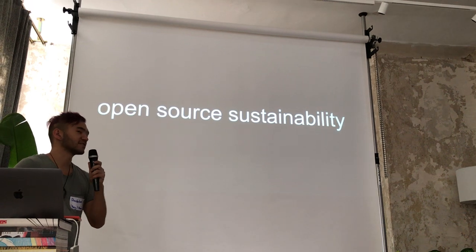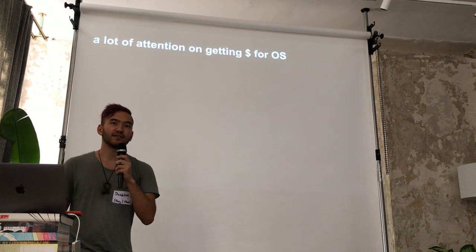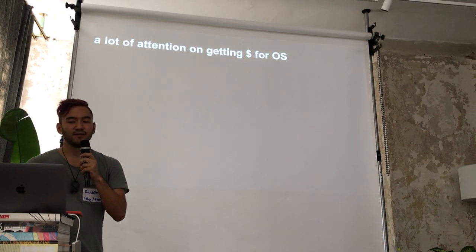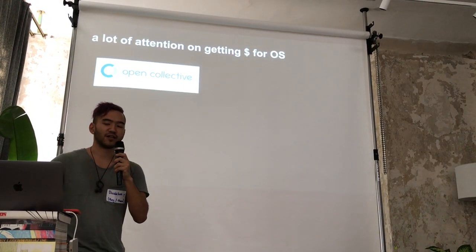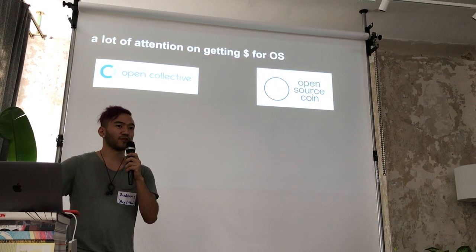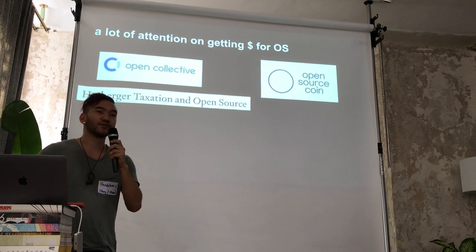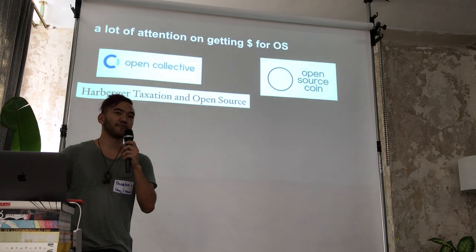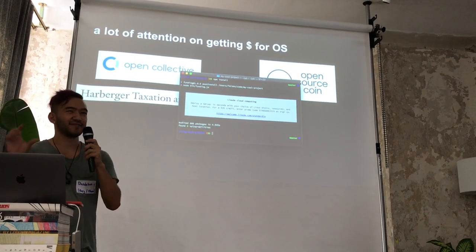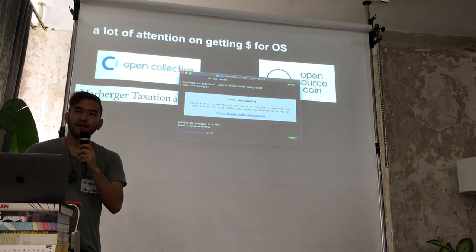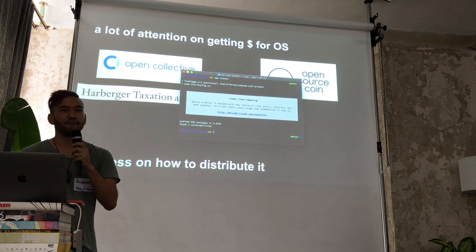Let's start with open source sustainability. A lot of people have been asking lately how we can raise money for open source, and there have been a lot of interesting experiments. Open Collective allows a patronage model. Open Source Coin is creating a cryptocurrency to fund open source. There are ideas like a Harberger tax to force proprietary users to pay, and even ad-supported open source. But we've been spending less time thinking about how to distribute that money if we get it.